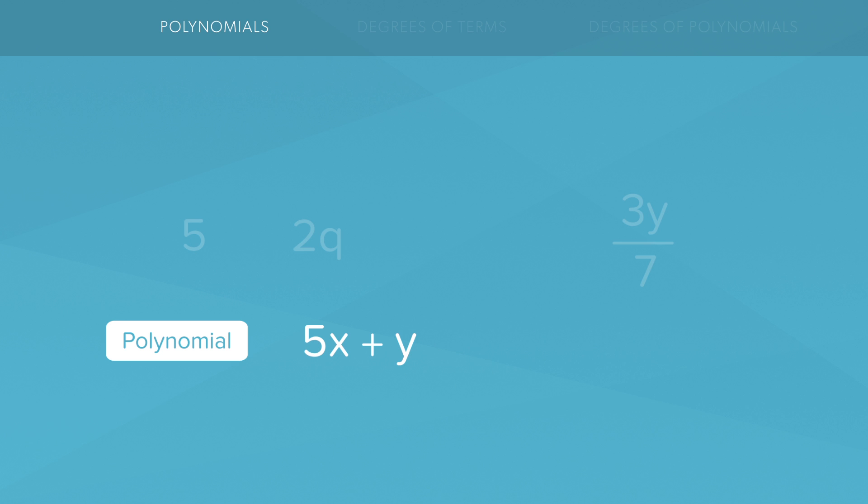The tricky part however is with division. When you have a term being divided by a number, like this situation right here, this is considered a polynomial. However if instead it's being divided by a variable then it is no longer considered a polynomial. Instead we would classify this as a rational expression.